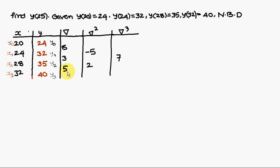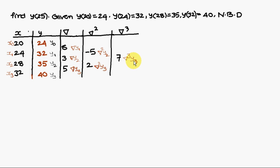In Newton backward, from the last entry downward, you give the naming using nabla. This value is nabla y3, then nabla y2, then nabla y1. Similarly, nabla squared y3 is given bottom to top, then nabla squared y2. The third difference is nabla cubed y3. All second difference values are nabla squared; all first difference values are nabla.